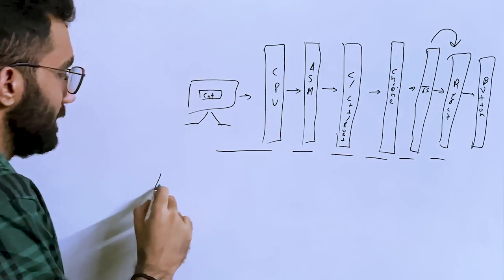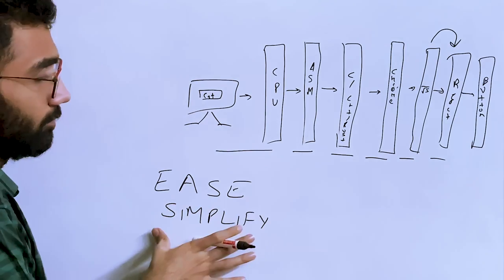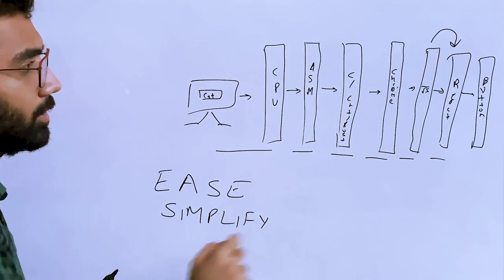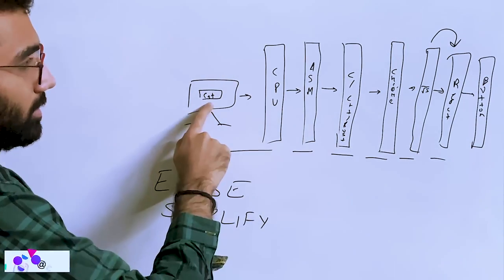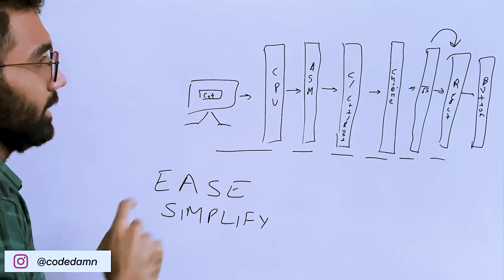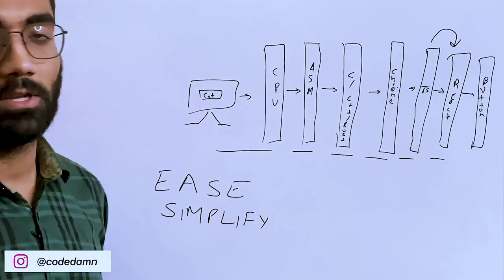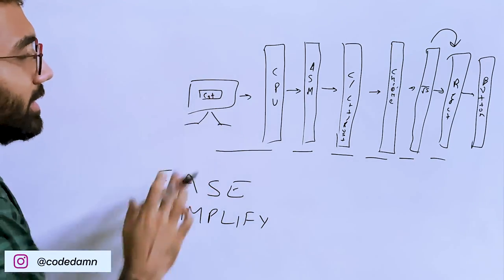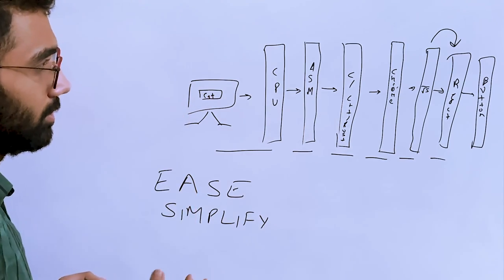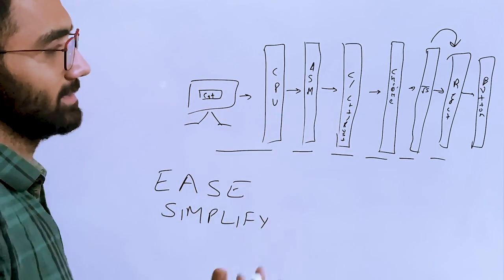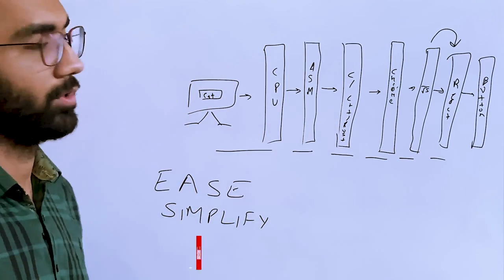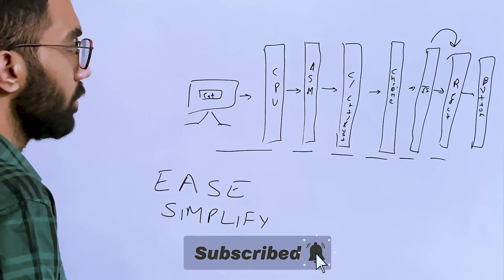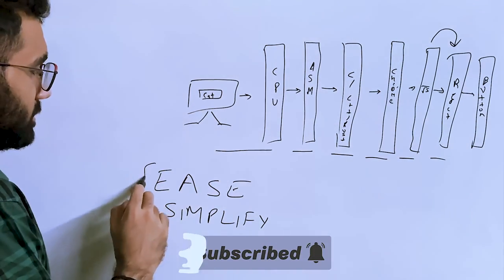The purpose of each abstraction is to ease and simplify the final goal. The way you determine whether you need a framework: does the framework ease the process — in terms of functionality, security, or otherwise — or simplify the process? If both answers are false, you don't need that framework.